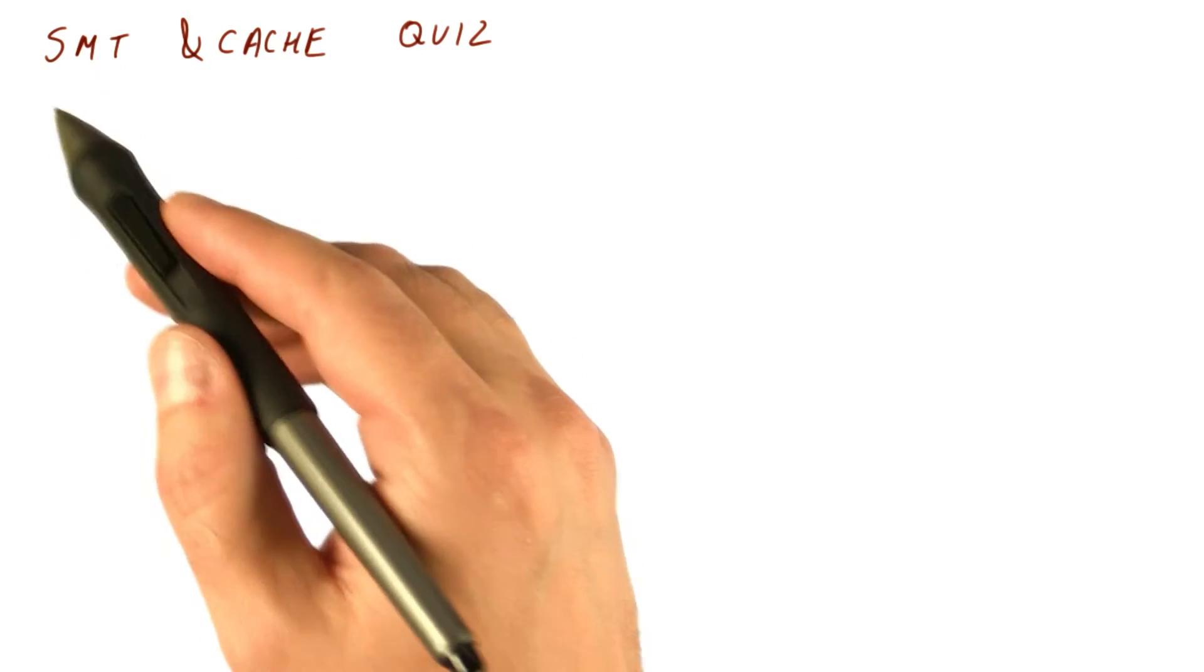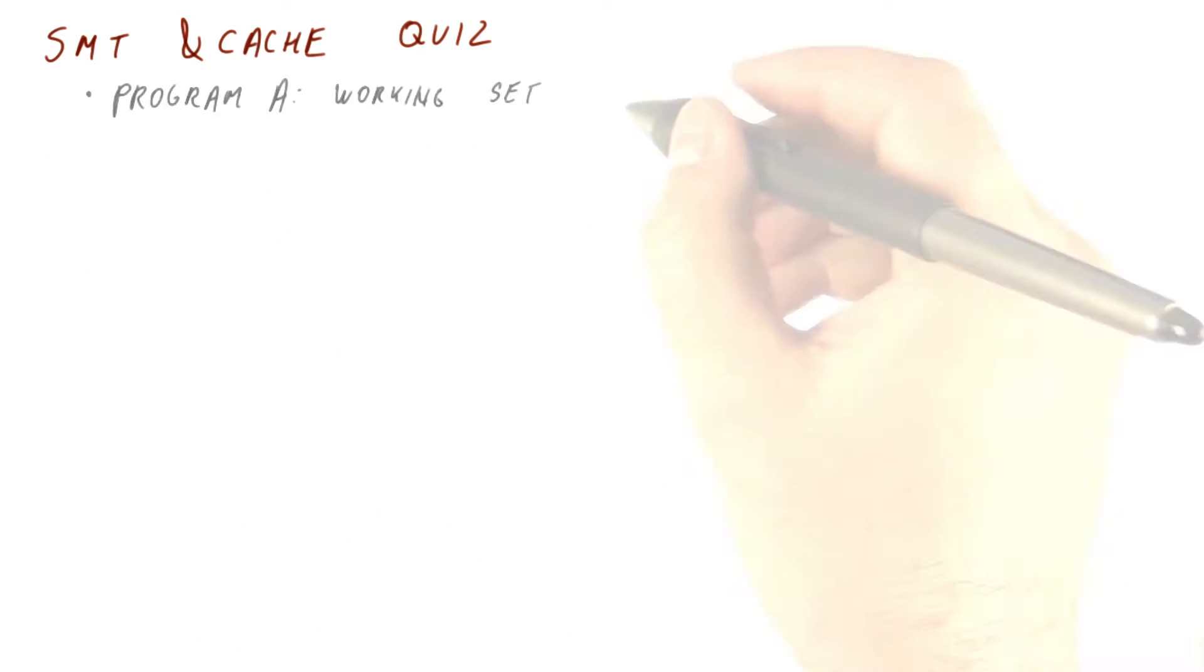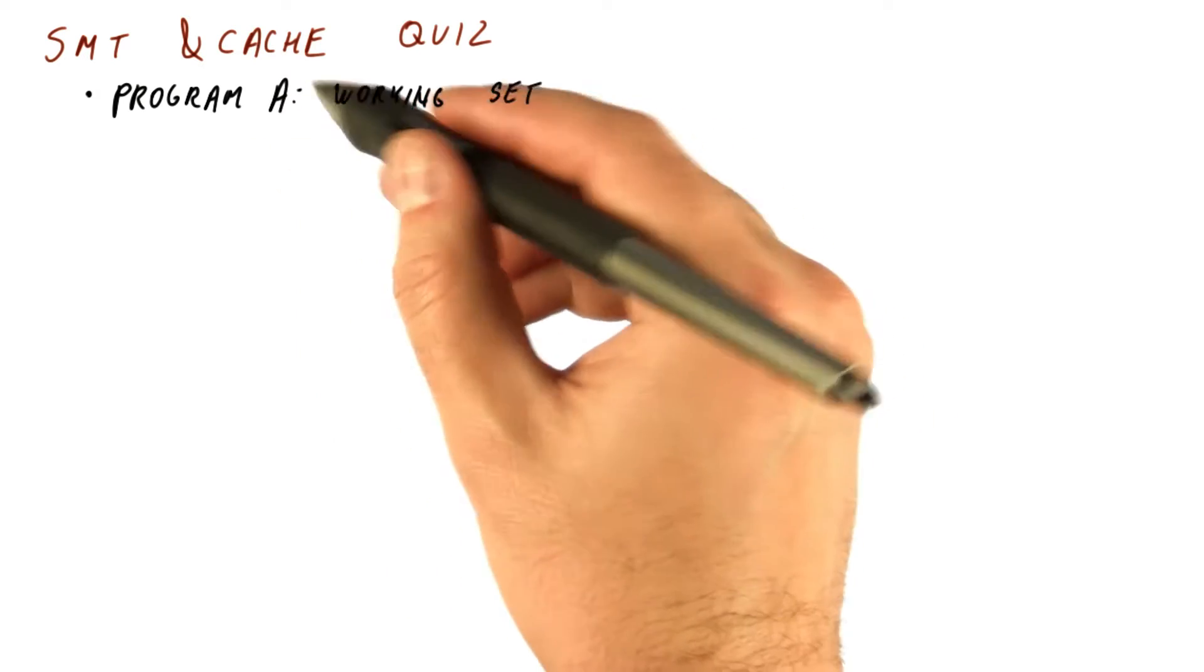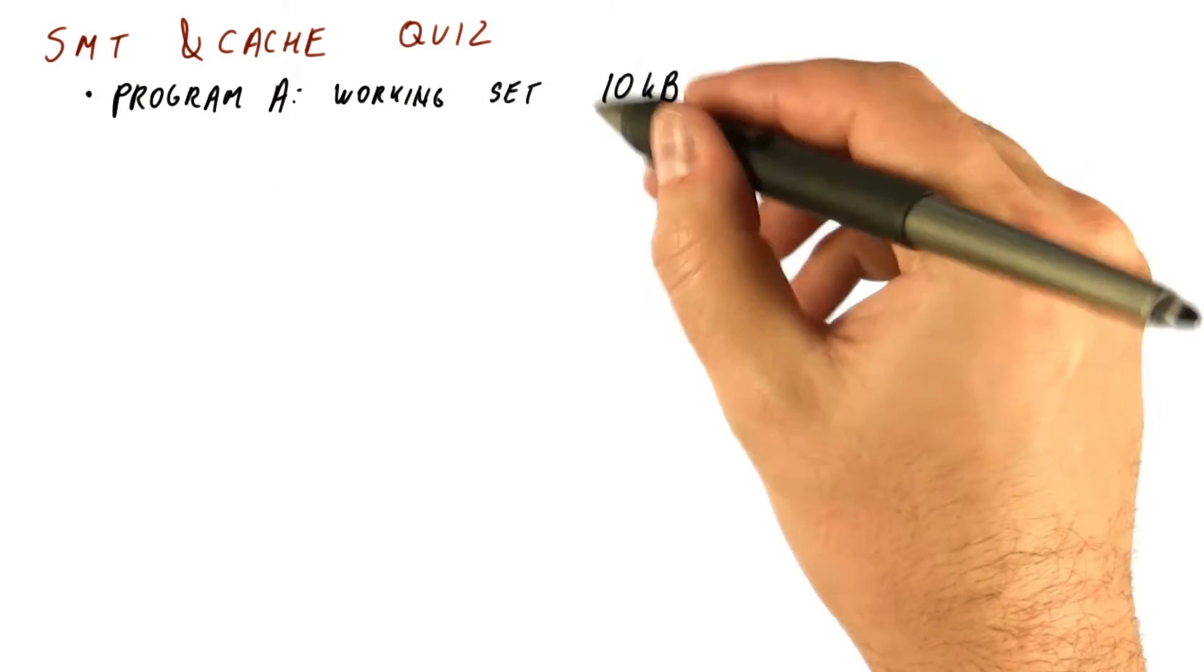Let's see if we understand the relationship between SMT and cache behavior. Say we have a program named A whose working set is 10 kilobytes.